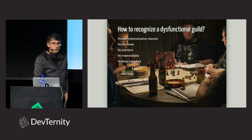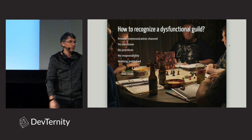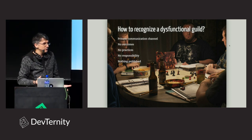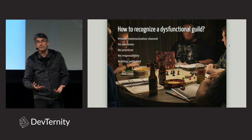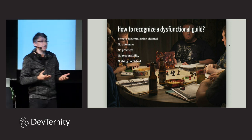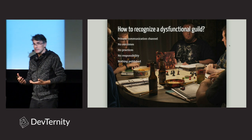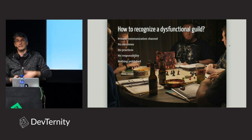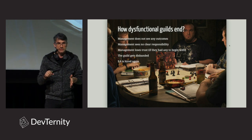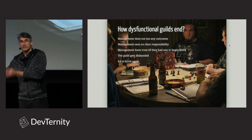First of all, there are only private communication channels — you can't join and listen to what they're talking about. They have their own Slack or video channel, maybe they meet physically. Then there are no outcomes: if you ask the guild what they did last week or last month, nothing is published. And nobody actually knows what the responsibility of the architecture guild is. When there's no responsibility and nothing gets published, the CTO loses trust. After three to six months, the CTO says this doesn't work, let's get rid of it and hire an enterprise architect again.